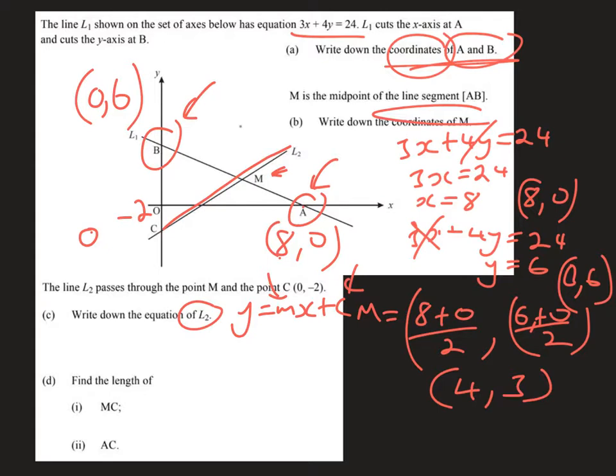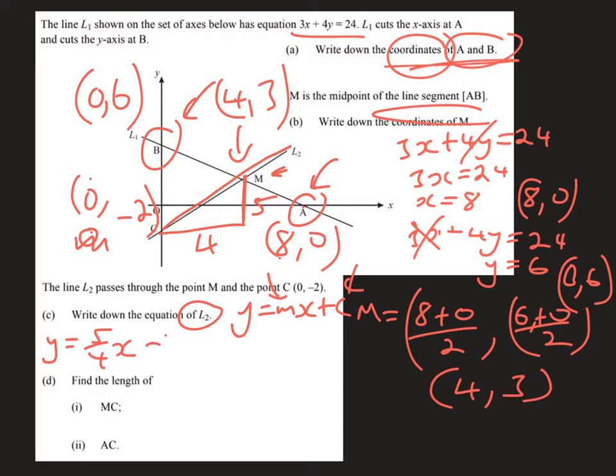We've got the coordinates of the midpoint which were (4, 3) and the coordinates here which is (0, -2). The change in height between 3 and -2 is 5, and the change in width between 4 and 0 is 4. It's upward sloping, therefore the gradient is 5 over 4. So y equals 5/4x minus 2.